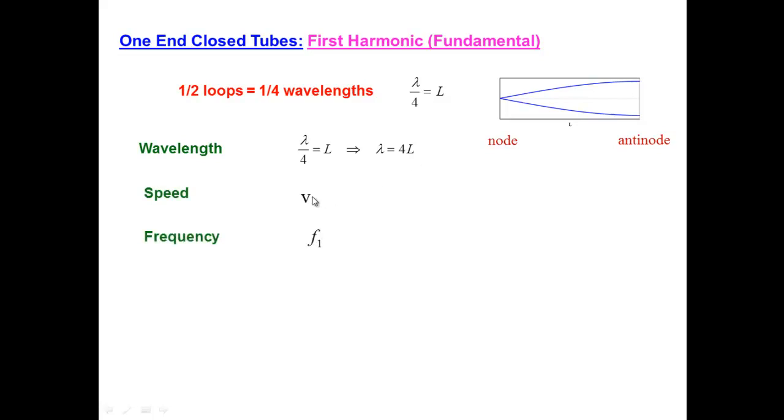So, since wavelength is 4L, speed is V, and that's going to be, in this case, the speed of sound. So, usually, there'll just be a number provided for that. The frequency is given by the familiar relation V equals frequency times wavelength. So, here, V is this first frequency times the wavelength, 4L, and we solve for the frequency and see that it's V divided by 4L.